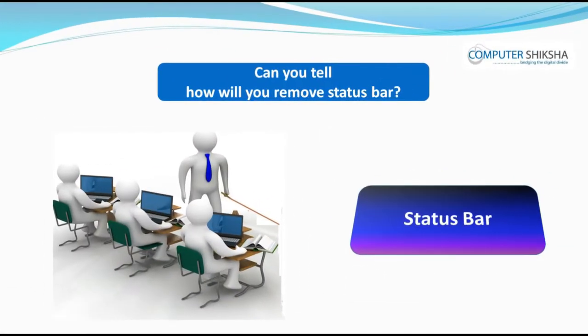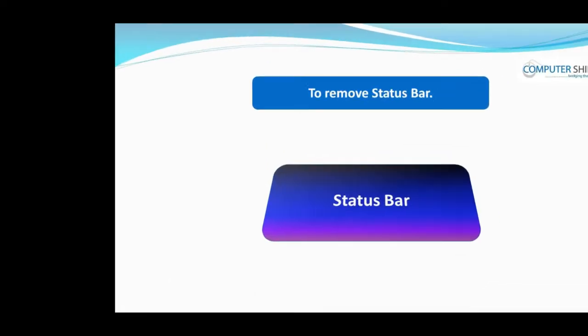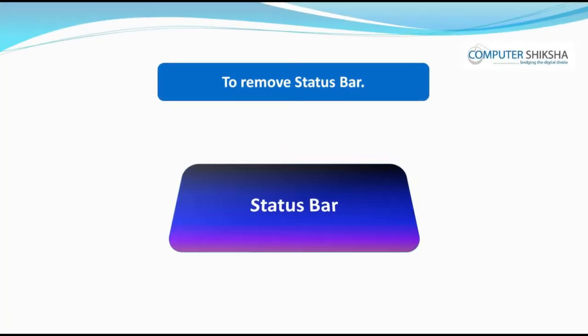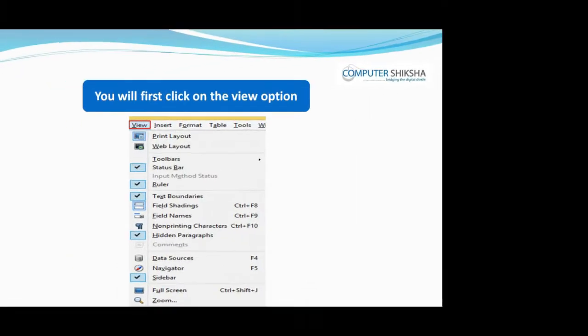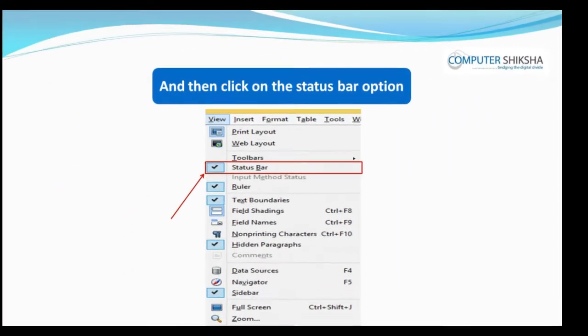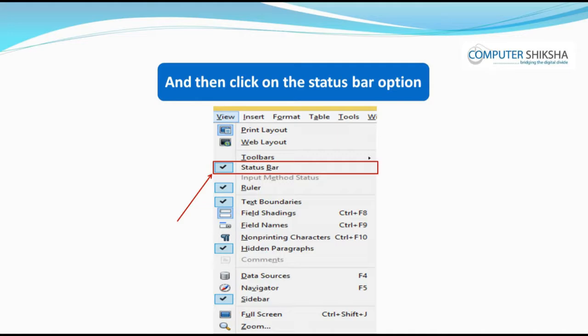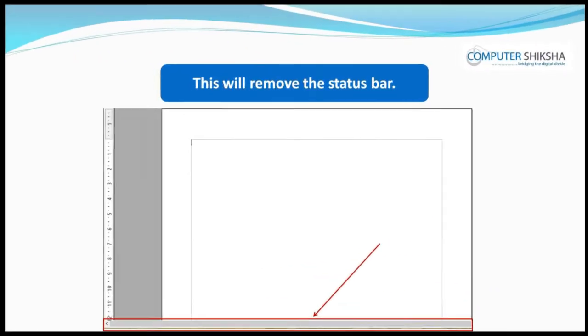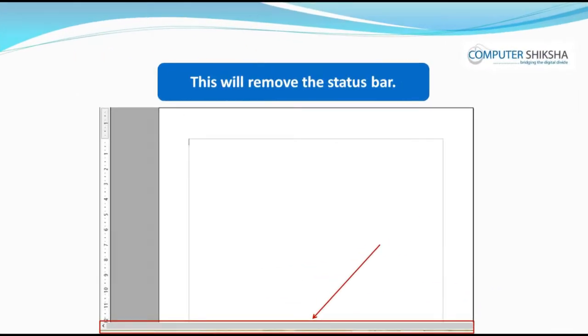Can you tell how will you remove the status bar? In order to remove the status bar, you will first click on the View option and then click on the Status Bar option. This will remove the status bar.